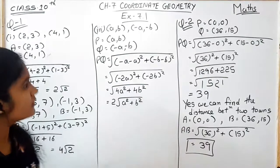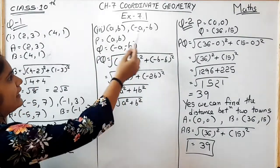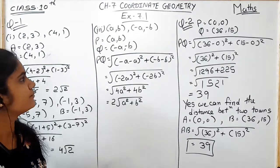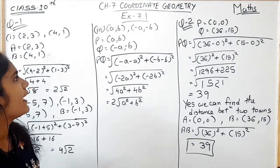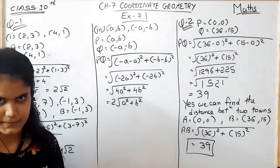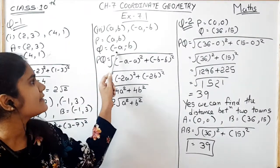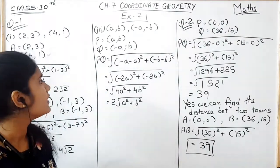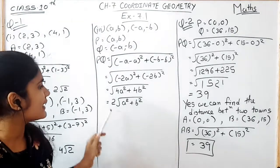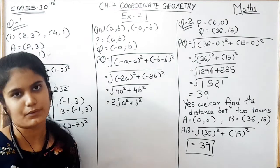In sub-part 3, the points are P(a, b) and Q(−a, −b). Using the distance formula, we get the answer 2√(a² + b²).